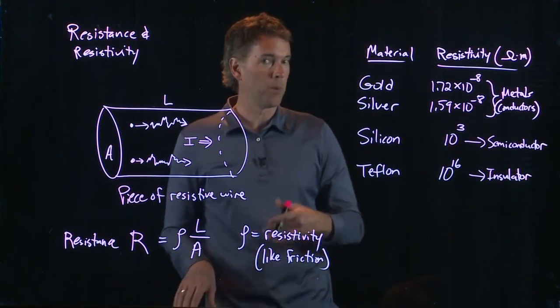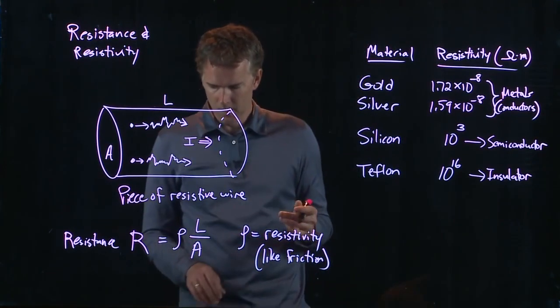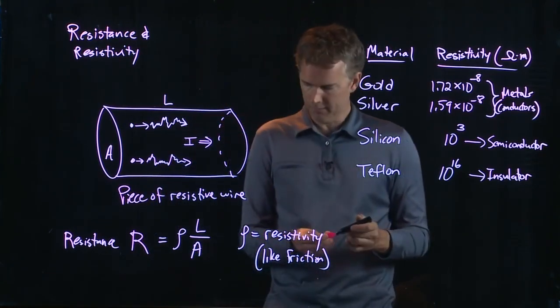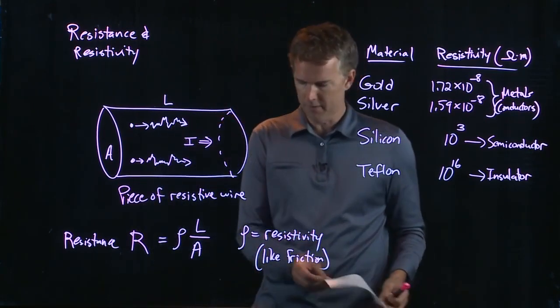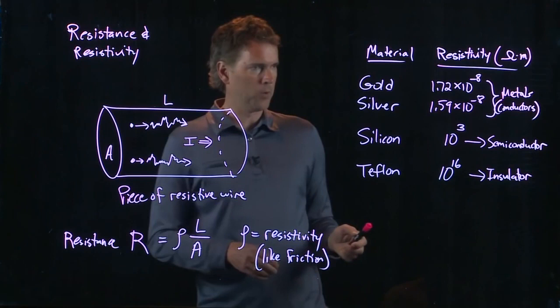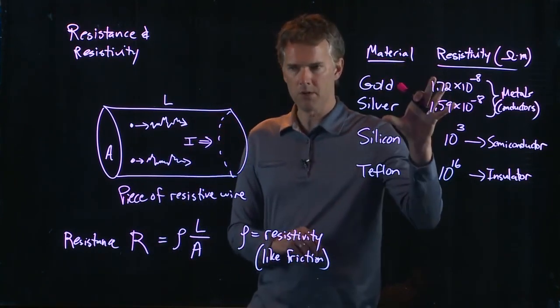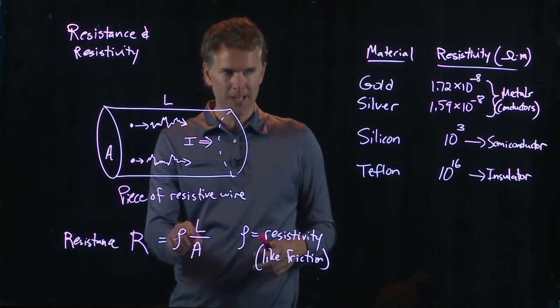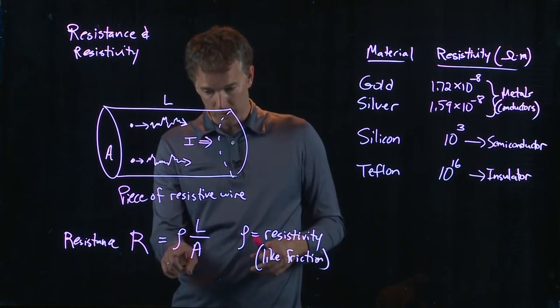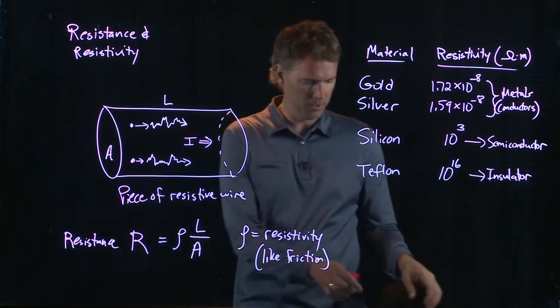Semiconductors are, of course, what powers all of your computer chips. All right, so let's try an example of calculating some resistances of different things. The important thing to remember here is that resistivity depends on the atomic structure. Resistance depends on the dimensions. What it's made out of, but also how long it is and how thick the cable is.